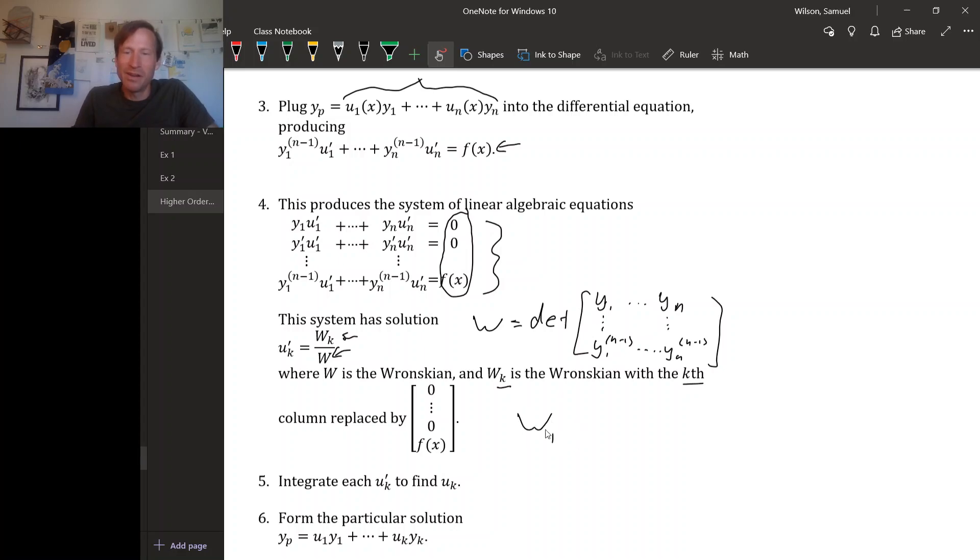So, for example, W sub 1 is the determinant of, we're going to replace the, since this is W sub 1, we replace the first column with zeros and f of x.